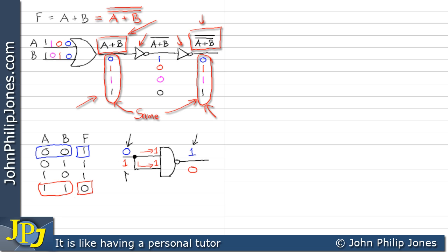If I put a one at the input, both inputs are one, and looking at that condition I can see the output will be a zero. So when the input was a zero the output was a one, and when the input was a one the output was a zero. The other input combinations are not possible since the inputs are tied together. That is the equivalent of a NOT gate — joining the inputs of a NAND gate gives us the logic equivalent of a NOT gate.